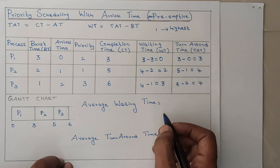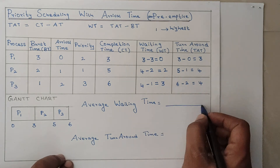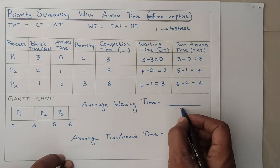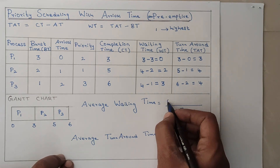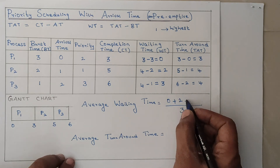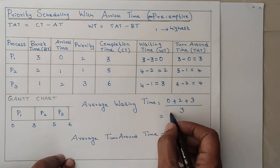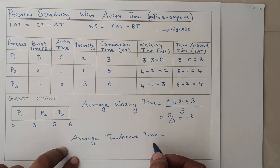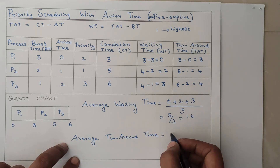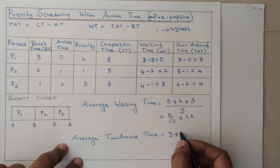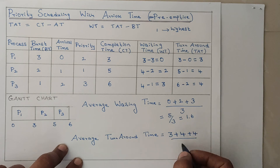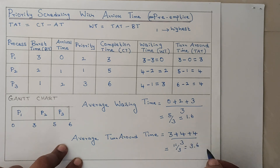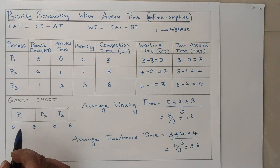To calculate average waiting time, we sum the waiting times of each process and divide by the total number of processes, which is 3. Waiting times are 0, 2, and 3, giving 5 divided by 3, which is approximately 1.6. For average turnaround time: turnaround times are 3, 4, and 4, giving 11 divided by 3, which is approximately 3.6.